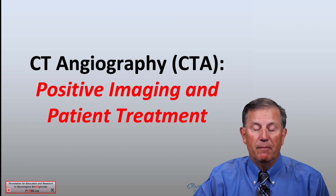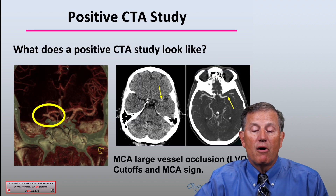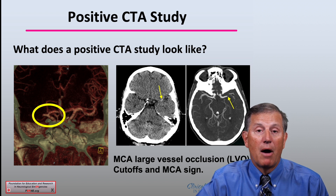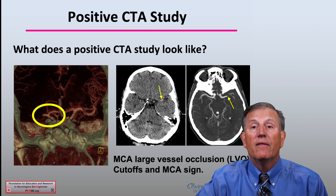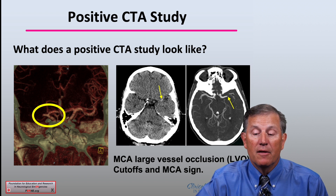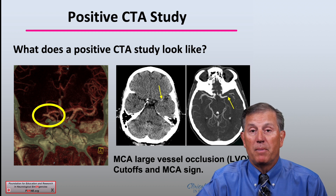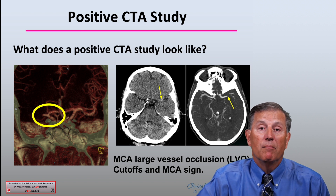What about positive imaging and patient treatments in patients with CT angiograms? You see here on the left, a cutoff in the middle cerebral artery in the yellow circle related to a thrombus or embolus. This MCA large vessel occlusion shows you on the right, in the area with the yellow arrows, the presence of the clot within the MCA itself called the MCA sign. This is apparent on non-contrast CT and does not require a CT angiogram to observe this.